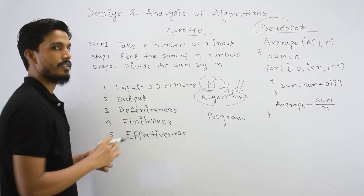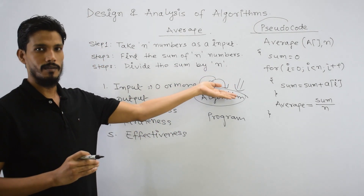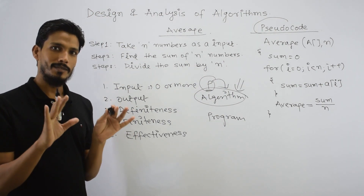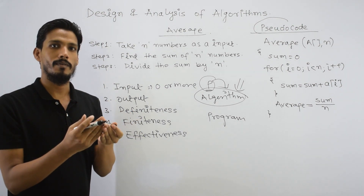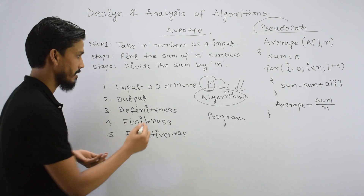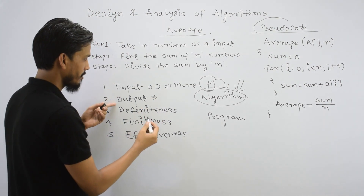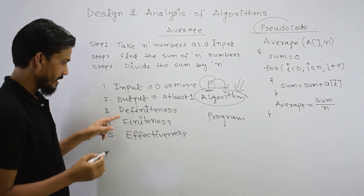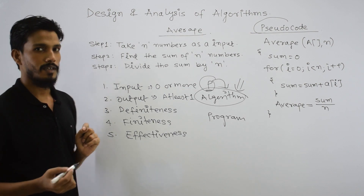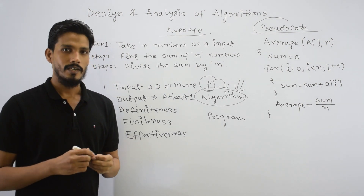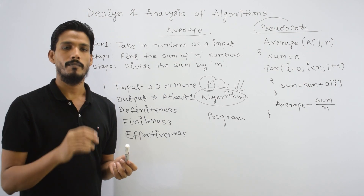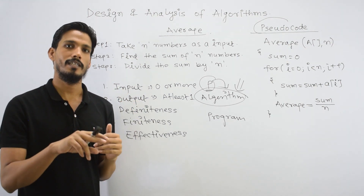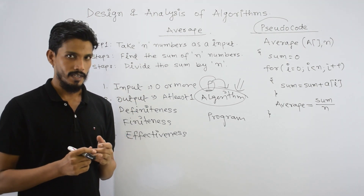Without any input, there can also be many algorithms. The other property is output. If there is any algorithm, it should have at least one output. If we execute an algorithm and there is no output, then there is no sense to it. So input is zero or more, and output must be at least one. The next important property is definiteness. Definiteness means that if we write an algorithm, the steps should be very clear and unambiguous.